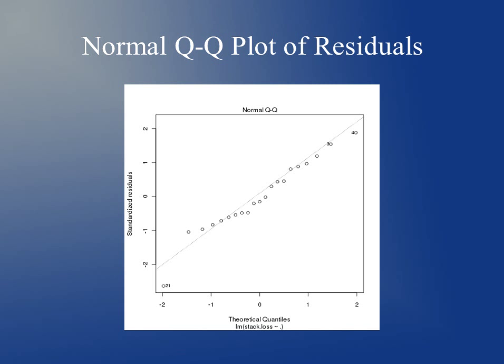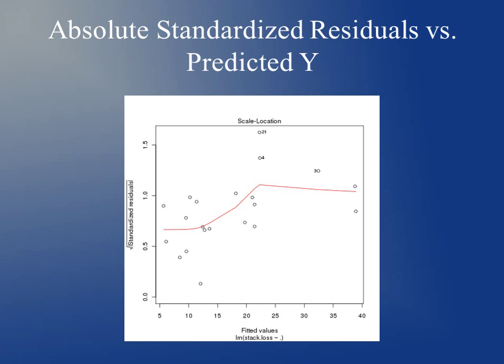The normal QQ plot should show the data distributed about the line, and we can see that for the most part it's right at that line — maybe a little bit of deviation at the extremes of the QQ plot, but for the most part it's pretty good. The graph of the absolute standardized residuals versus predicted y converts all negative values to positive, and we'd expect just a random cloud of dots. The red line here suggests we might have a little bit of a problem with heteroscedasticity, but for the most part it's pretty good.